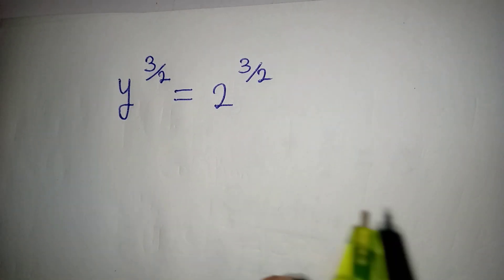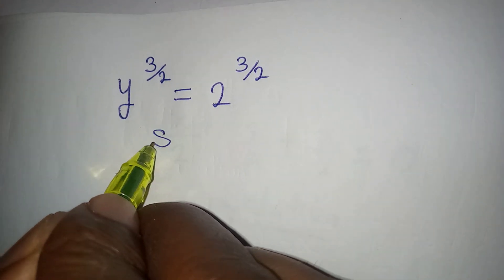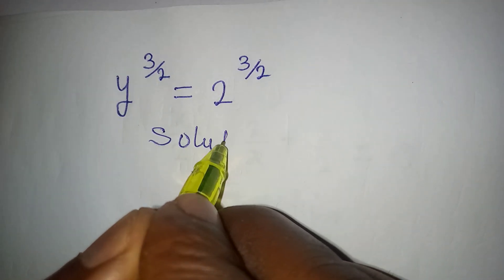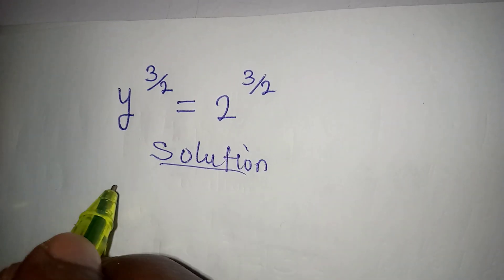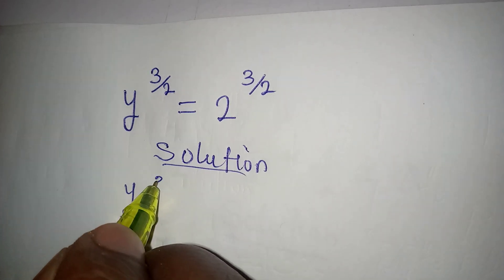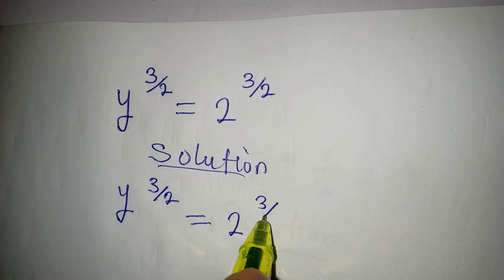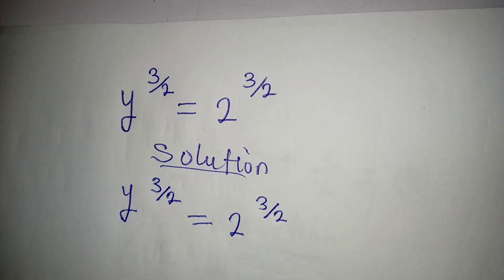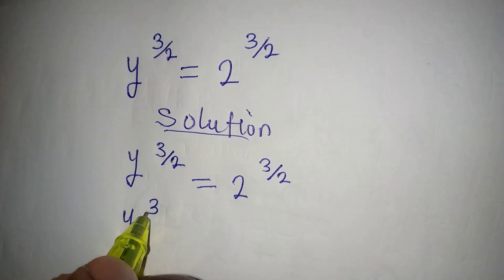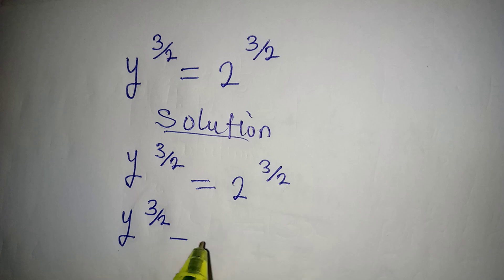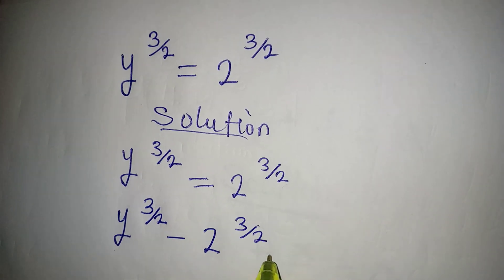Hello everyone. Let us find the value of y in this problem. We have y to the power of 3 over 2 equal to 2 to the power of 3 over 2. From here, we have y to the power of 3 over 2 minus 2 to the power of 3 over 2 equal to 0.